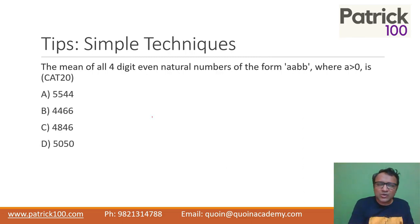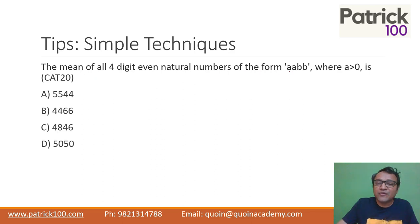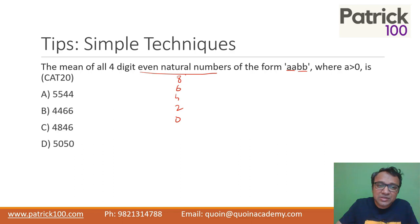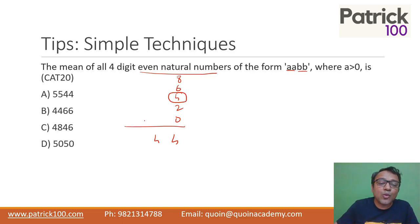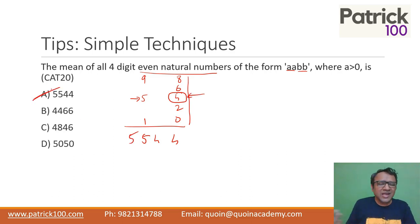Next, look at simple techniques. Here's another example: find the mean of all four-digit even natural numbers in the form AABB, where the first two digits are the same and the last two digits are the same. Even natural numbers have a last digit of 0, 2, 4, 6, or 8 — the average of these is 4. The first two digits can be 1 to 9 (zero cannot be first), and the average of 1 to 9 in arithmetic progression is the middle number, which is 5. So the mean is 5544. You get the answer straight away — any complicated method would take much longer.